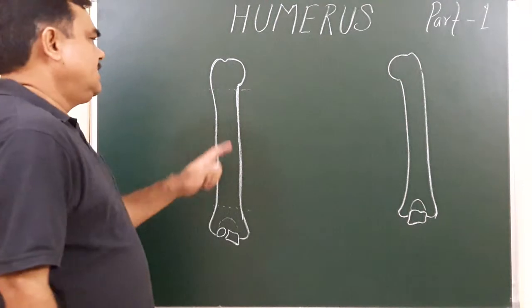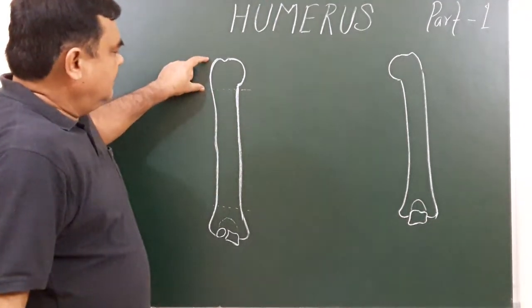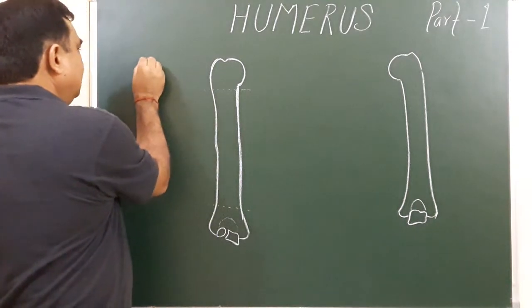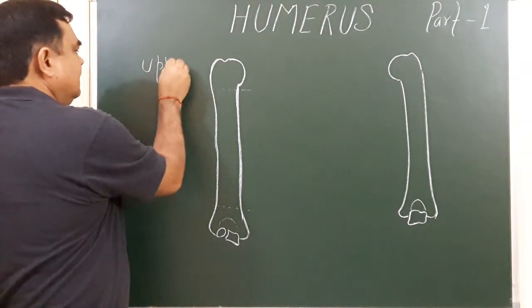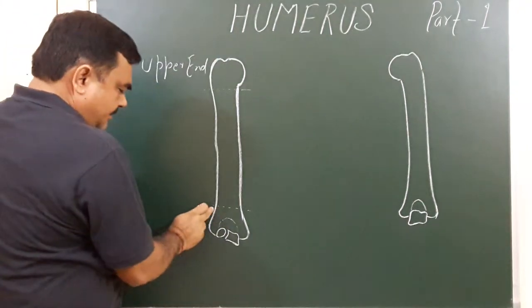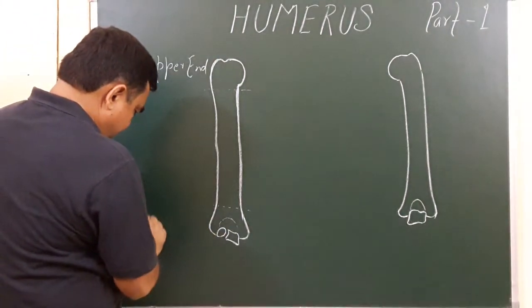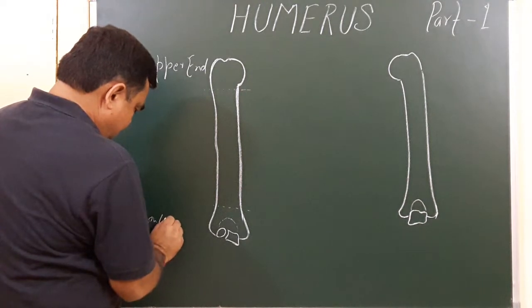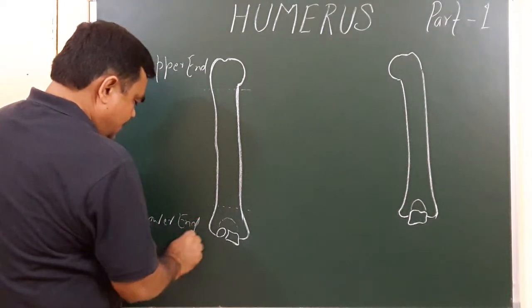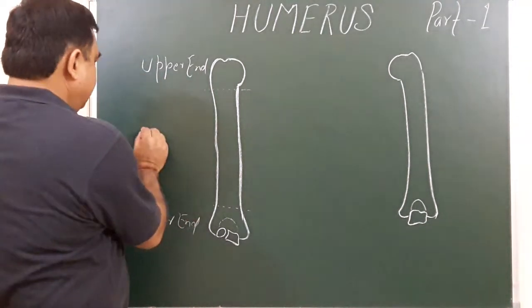There is a division of the humerus. Above this line is the upper end, and below this line is the lower end. In between these two is the shaft.